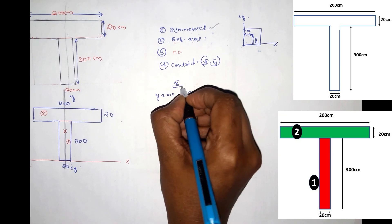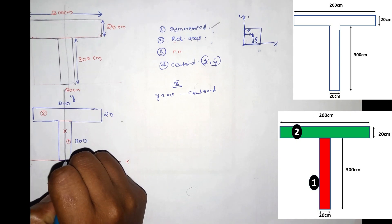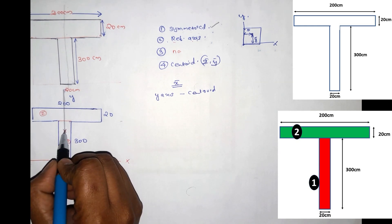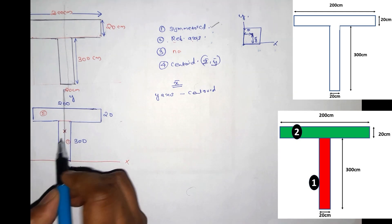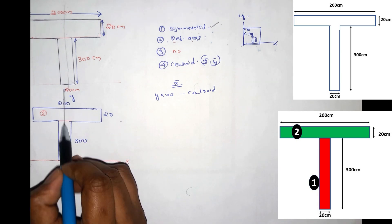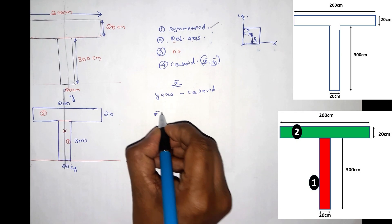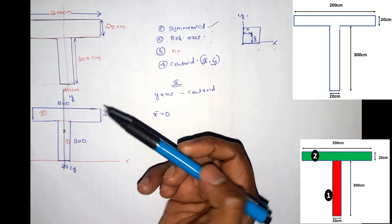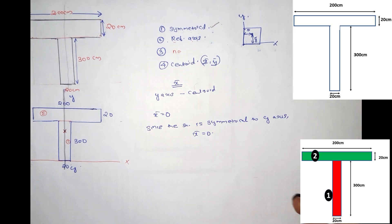We have x-bar. As this axis will be a point in the center, we are just marking it. The y-axis is the center. X-bar is equal to 0, because the figure is symmetrical about the y-axis. So x-bar is equal to 0.